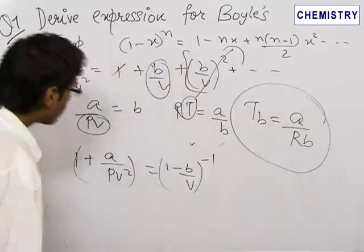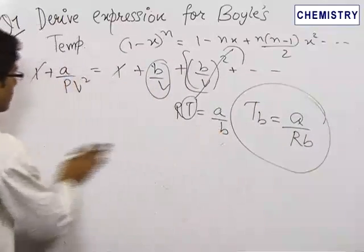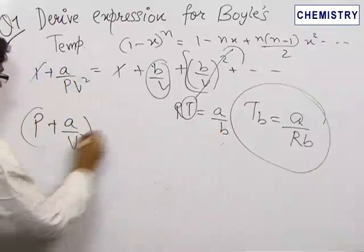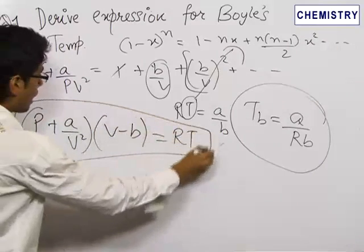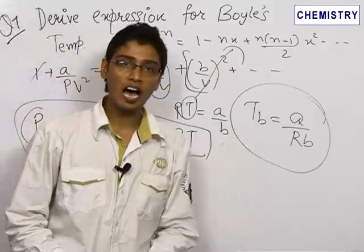The main thing or the main formula which we used in getting the expression for T_b equals A upon Rb is the Van der Waals equation which is a very important expression and you should remember this. So, the final expression for Boyle's temperature is A upon Rb.